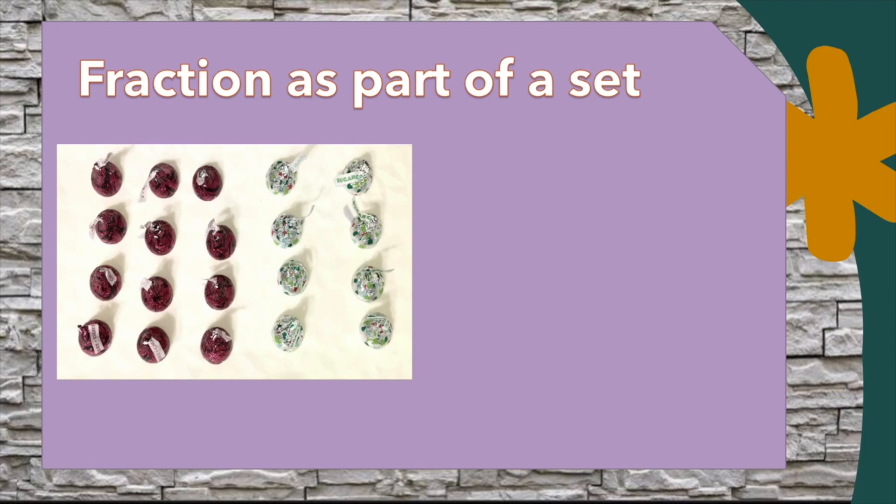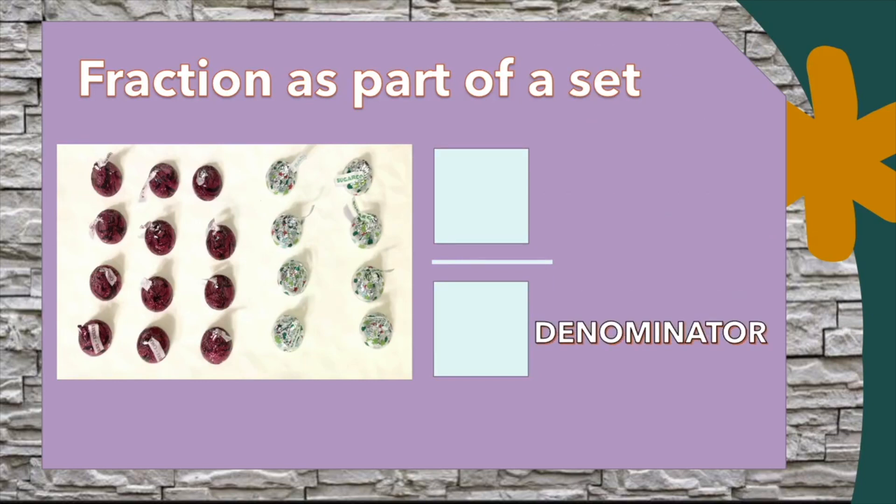The first thing they have to do is count the total number of chocolates in the set. A fraction has three parts: the numerator, the denominator, and the line in between. The total number of pieces will be the denominator, and in this particular set we have 20.